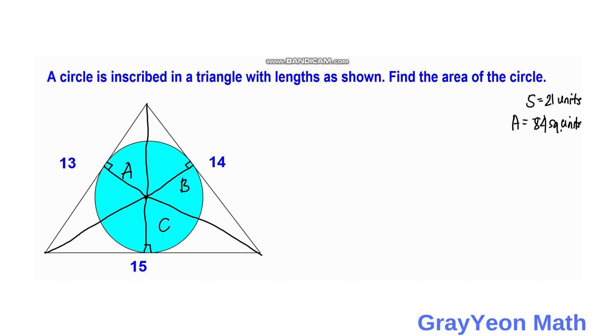Since we know the area of the whole triangle is 84, and it is subdivided into three triangles with the same height which is R, and three different bases which are the sides of the largest triangle, that would be 1/2 R times 13 plus 1/2 R times 14 plus 1/2 R times 15.